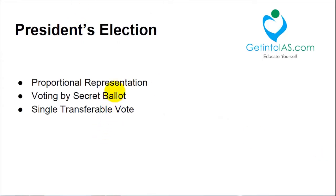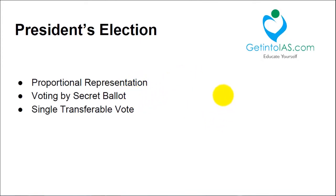There are three components in the presidential election. First is proportional representation — the main principle is to prevent the exclusion of minorities, ensuring everyone is represented. MPs and MLAs are both represented. For example, UP is a large state and will have more MPs and MLAs, whereas Goa or Sikkim, being small states, will have smaller representation. All are proportionally represented.